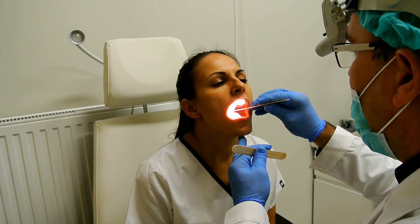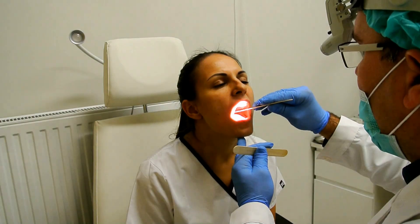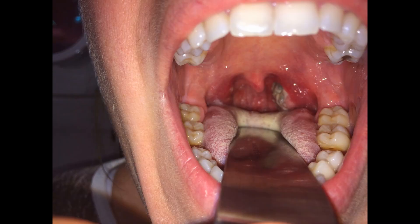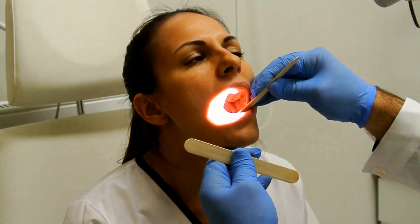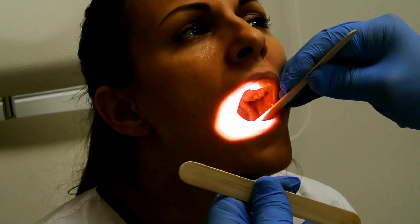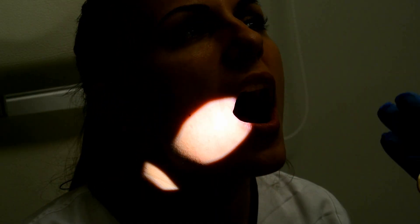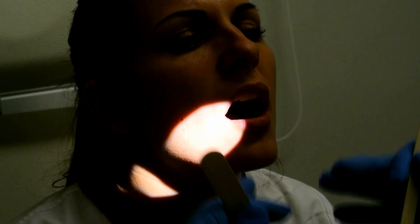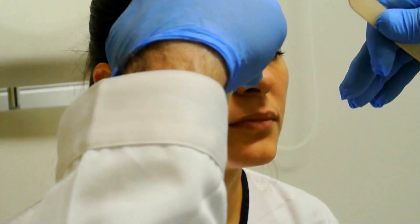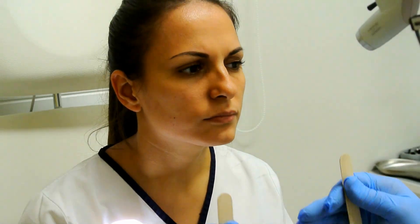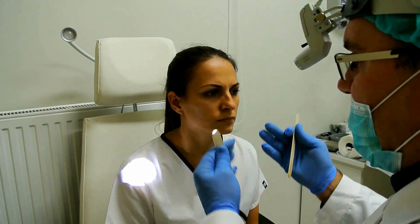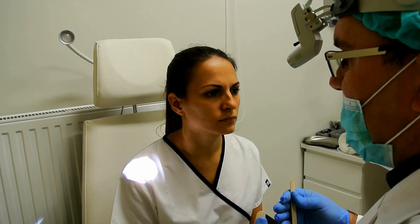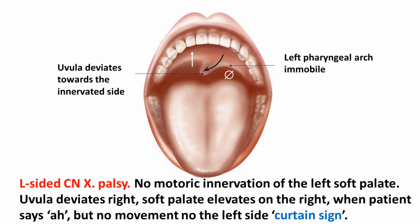We should press down the tongue and ask the patient to say the vowel 'ah' in order to check the movement of the soft palate. The uvula is normally in the midline and should rise symmetrically. In case of poor innervation of the soft palate muscles or lack of sensory innervation, the uvula can deviate to either side.